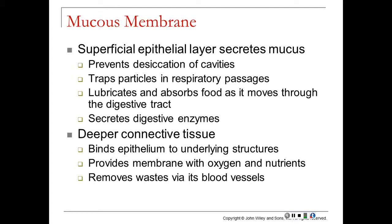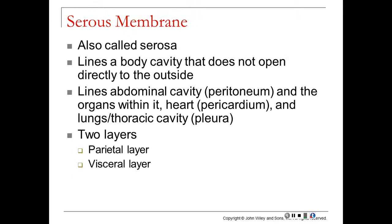The mucous membrane has a superficial epithelial layer that secretes mucus and a deeper connective tissue layer binding the epithelium to underlying structures. The superficial layer prevents desiccation of cavities, traps particles in respiratory passageways, lubricates and absorbs food in the digestive tract, and secretes digestive enzymes. The deeper connective tissue layer binds the upper epithelium to deeper layers and, since epithelial tissue is avascular, helps provide oxygen, nutrients, and waste removal.